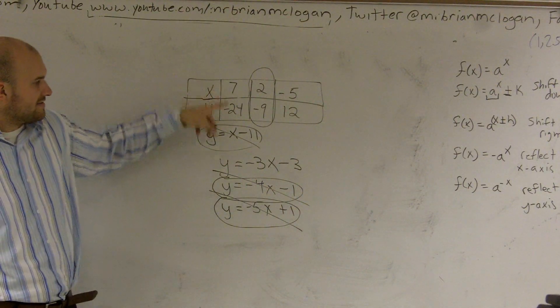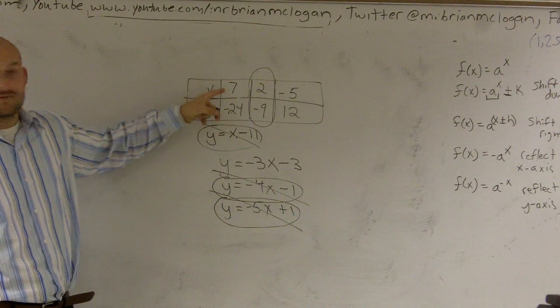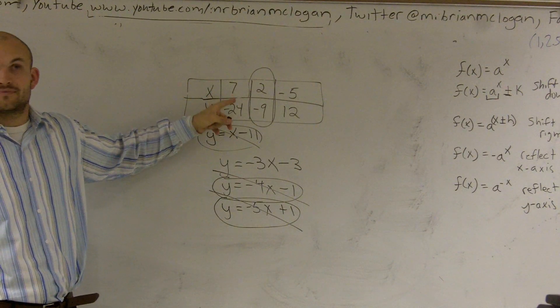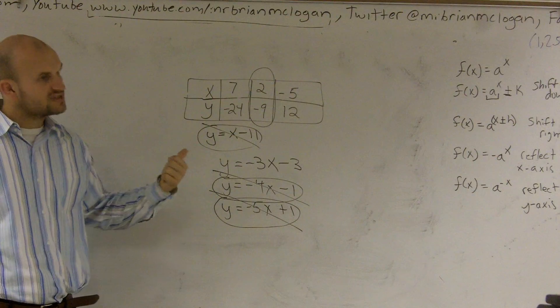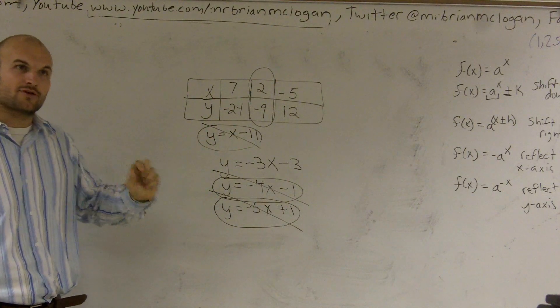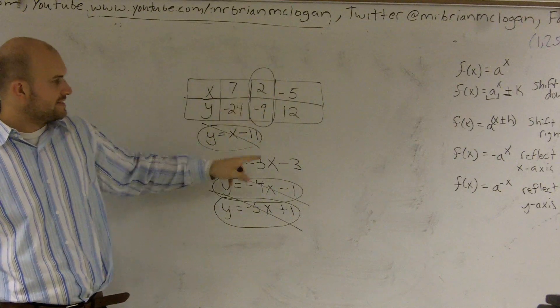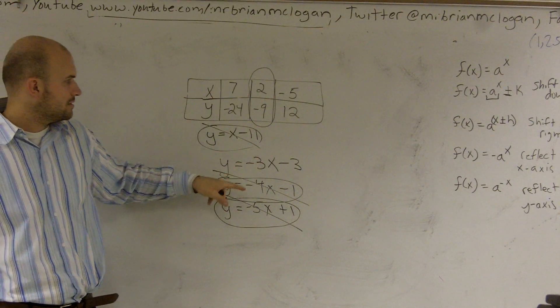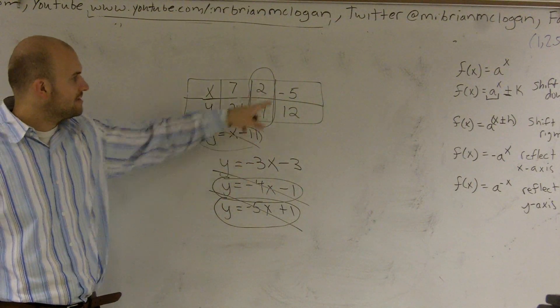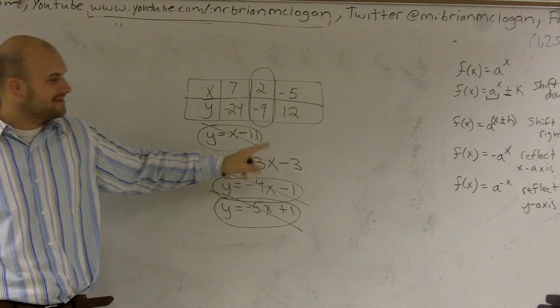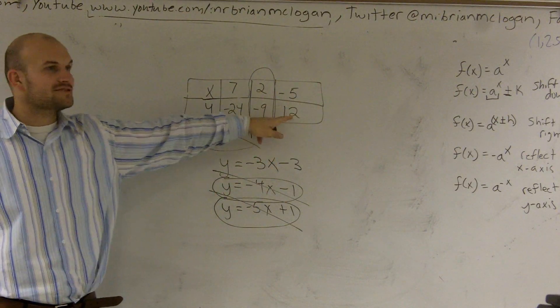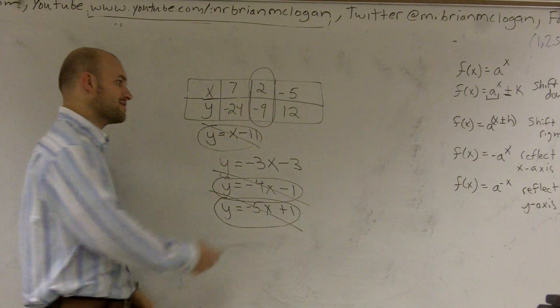Let's try this one. 7 times negative 3 is negative 21. Minus 3 is negative 24. Seems like it works. Let's just check the third value just to make sure. Negative 5 times negative 3 is positive 15. Minus 3 would be 12. So guess what? It works. So, therefore, that is your rule.